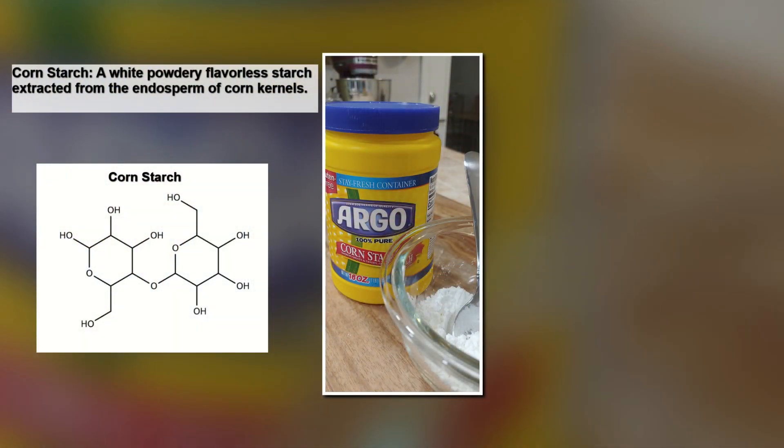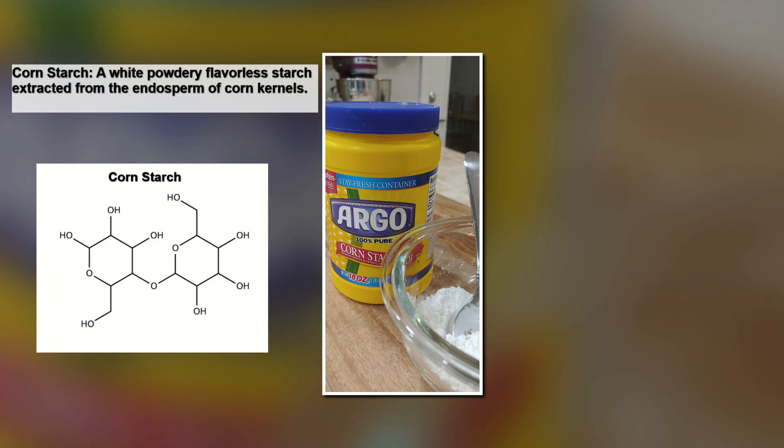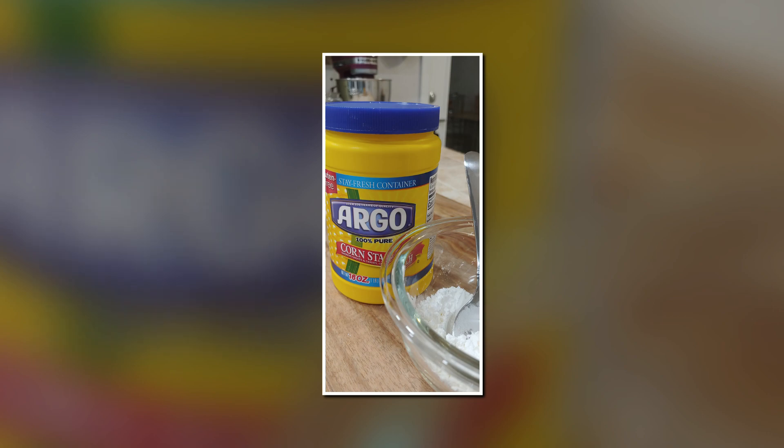First, I'd like to take a minute to define what exactly cornstarch is. Cornstarch is a flavorless starch that is extracted from the endosperm of corn kernels. It's a white and powdery substance, and it's essentially flavorless. Now to dive a little deeper into this definition, let's look at this on a molecular level. Cornstarch is made up of semi-crystalline granules called polysaccharides.